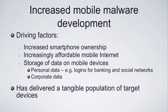What have been the driving factors? The increased ownership of smartphones — a third of UK adults now have a smartphone, so that begins to become a fairly tangible population. Affordable mobile internet access means people are getting the capability to be online and stay online with their mobile devices, so they are visible. And of course the storage of data — something worth getting from the mobile devices — some sort of valuable asset to attack, be it personal, be it corporate.